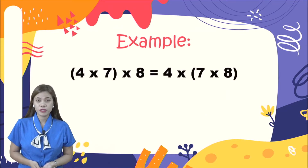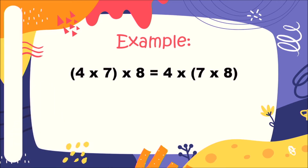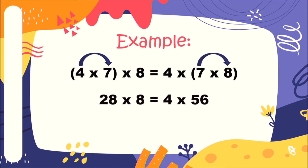We have here: (4 × 7) × 8 is equal to 4 × (7 × 8). On the first group, numbers four and seven are inside the parenthesis and eight is outside. On the other group, four is outside and seven and eight are inside. For the first step: four times seven is 28, then 28 times 8 equals 224. For the second group: seven times eight is 56, then four times 56 equals 224. Both answers are the same.